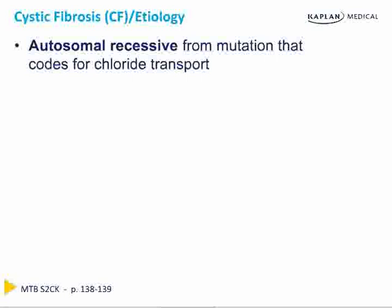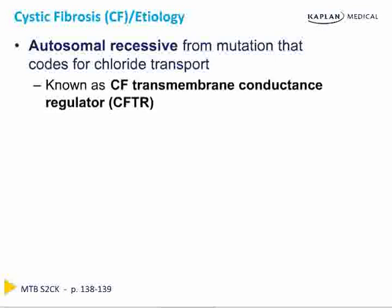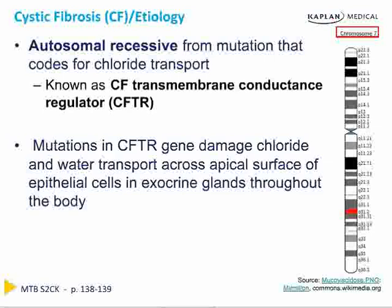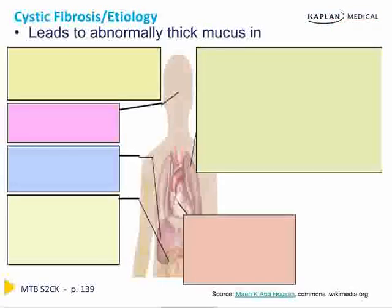Cystic fibrosis is the other major cause of bronchiectasis most commonly tested on USMLE Step 2. Cystic fibrosis is an autosomal recessive disease resulting in a mutation of the gene for chloride transport — most commonly the CF transmembrane conductance regulator, or CFTR. Mutations in the CFTR gene damage chloride and water transport across the apical surface of epithelial cells, occurring in exocrine glands throughout the body. This gene is located on chromosome 7.